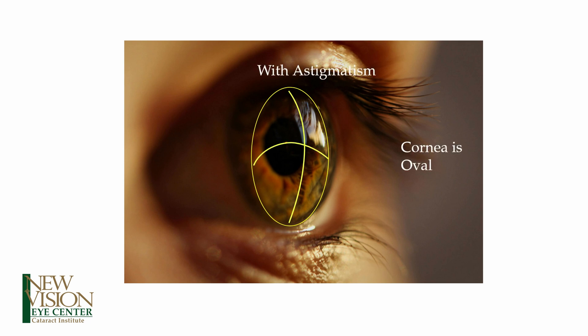In this example, people with astigmatism have one direction of curvature which is relatively long and flat compared to the perpendicular direction, which would be relatively short and steep.